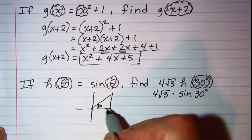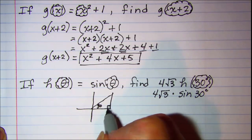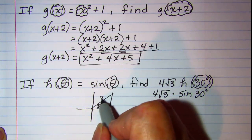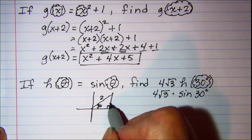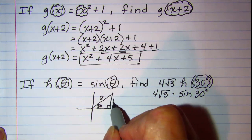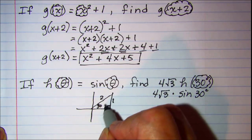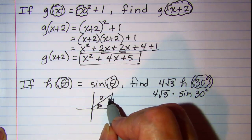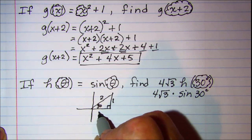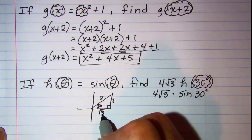So for a 30-60-90 triangle, if we let the hypotenuse be 2, the side opposite the 30 is half of that which is 1. And then the side opposite the 60, this will be my 60 up here, is half the hypotenuse times the square root of 3.